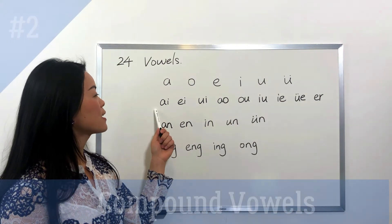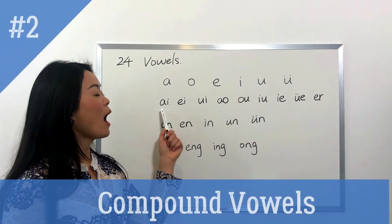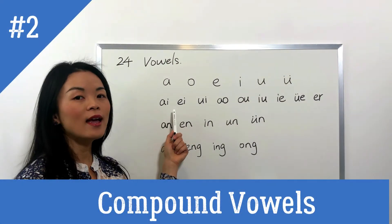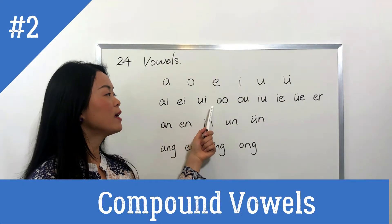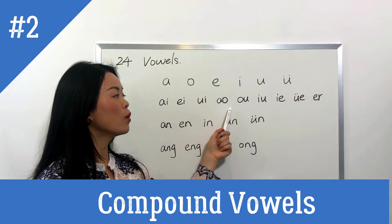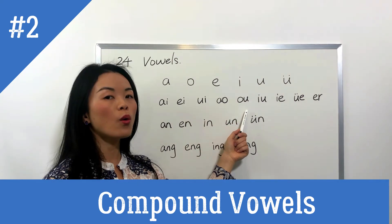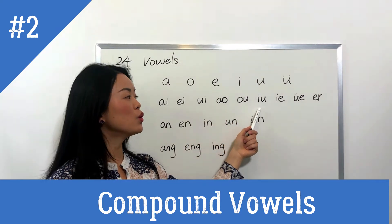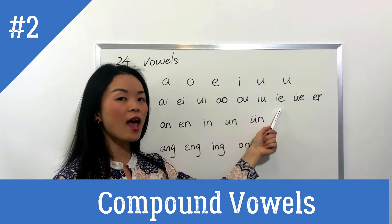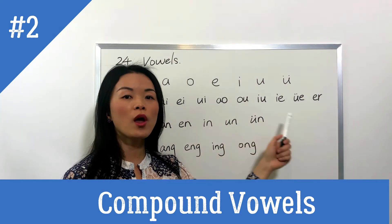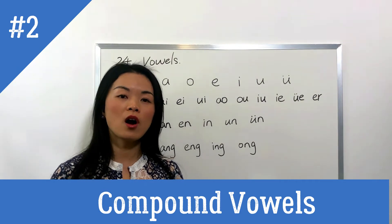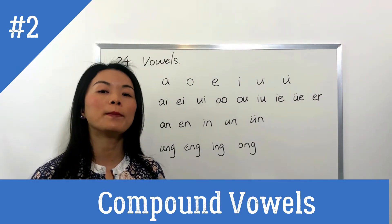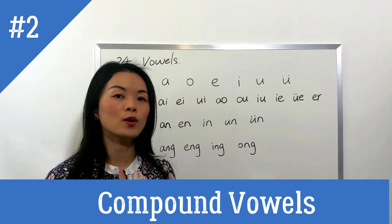The second line: I, A, W, O, U, Ye, Y, R — these are the compound vowels.